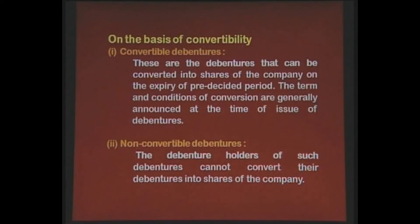The next category of debentures is on the basis of convertibility. The first one is convertible debentures — these are the debentures that can be converted into shares of the company on the expiry of a pre-decided period. The terms and conditions of conversion are generally announced at the time of issue of debentures. The second one is non-convertible debentures — the holders of such debentures cannot convert their debentures into shares of the company. Convertible and non-convertible debentures are self-explanatory.